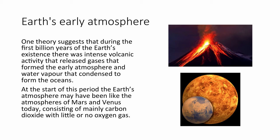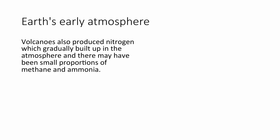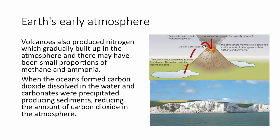Volcanoes produce lots of carbon dioxide, some nitrogen, and lots of water vapour. This water vapour condensed to make liquid water and form the early oceans and seas. When the oceans formed, carbon dioxide dissolved into the oceans and ancient marine organisms such as foraminifera and coral eventually took in the dissolved calcium and carbon dioxide to form carbonates to build their shells. Over time, these were crushed to form sedimentary rocks such as chalk and limestone, significantly reducing the amount of carbon dioxide in the Earth's atmosphere.